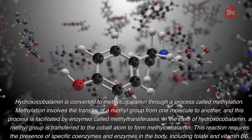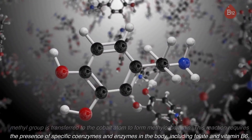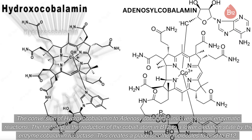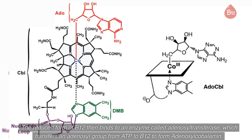This reaction requires the presence of specific coenzymes and enzymes, including folate and vitamin B6. The conversion of hydroxocobalamin to adenosylcobalamin involves several enzymatic reactions. The first step is the reduction of the cobalt atom in B12 to a lower oxidation state by the enzyme cobalamin reductase, creating a place for other molecules to bind. The reduced form of B12 then binds to an enzyme called adenosyltransferase, which transfers an adenosyl group from ATP to B12 to form adenosylcobalamin.